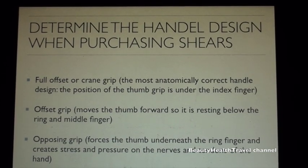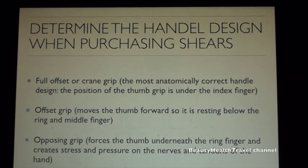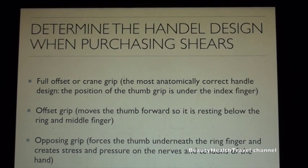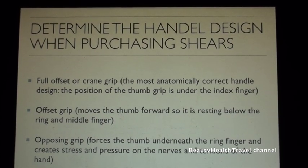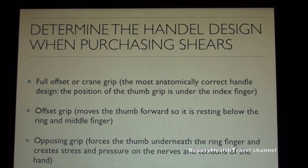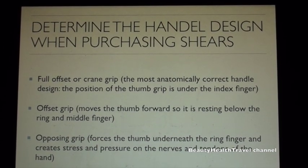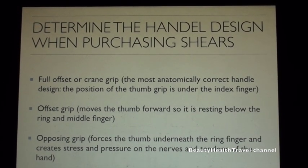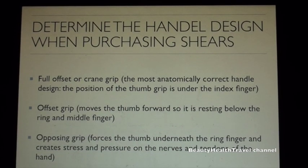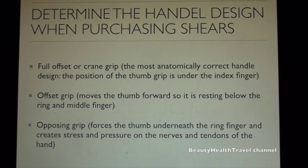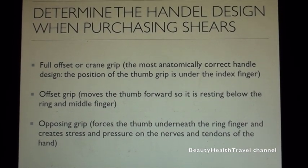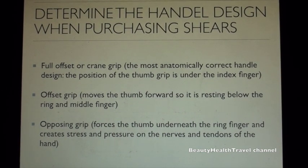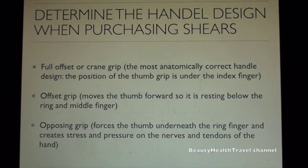Determine the handle design when purchasing shears. Full offset or crane grip is the most anatomically correct handle design — the position of the thumb grip is under the index finger. Offset grip moves the thumb forward so it rests below the ring and middle finger. Opposite grip forces the thumb underneath the ring finger and creates stress and pressure on the nerves and tendons of the hand.